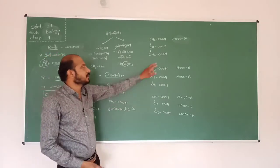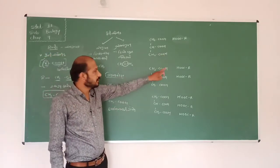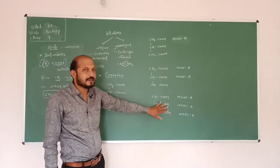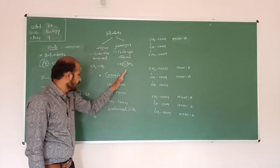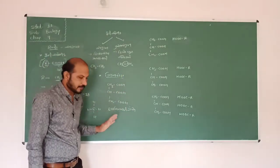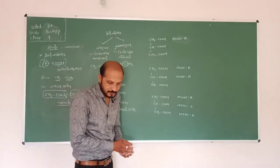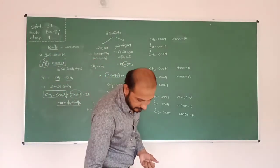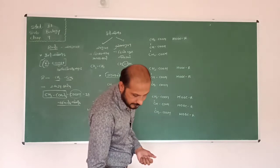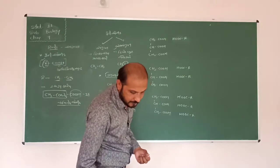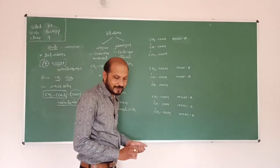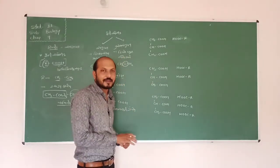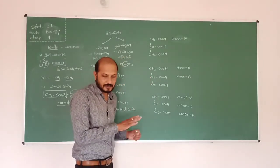One is monoglyceride, two is diglyceride, and three is triglyceride. We have three cells — R, C, double bond. In the textbook we have monoglyceride and triglyceride.